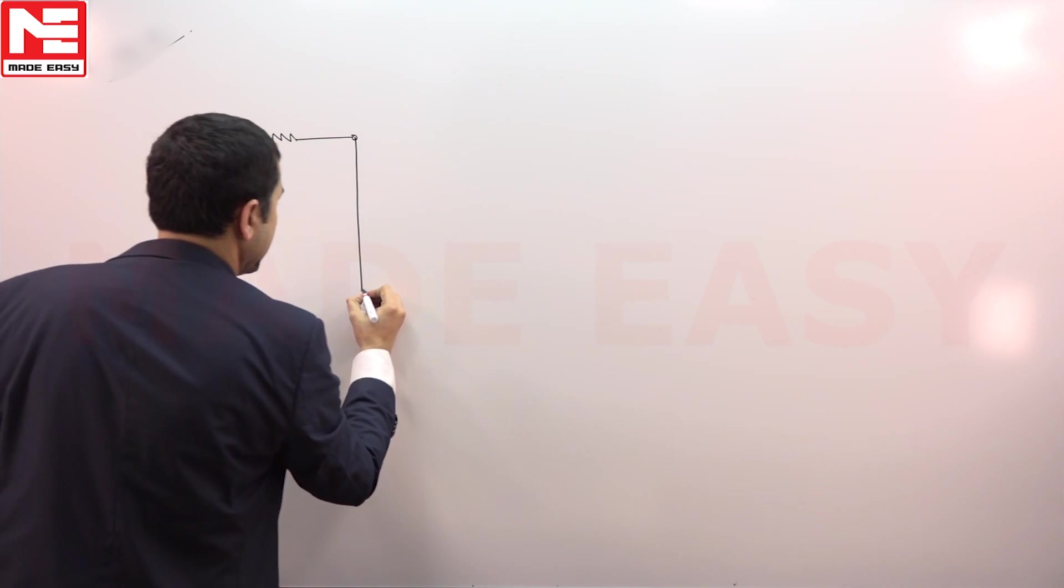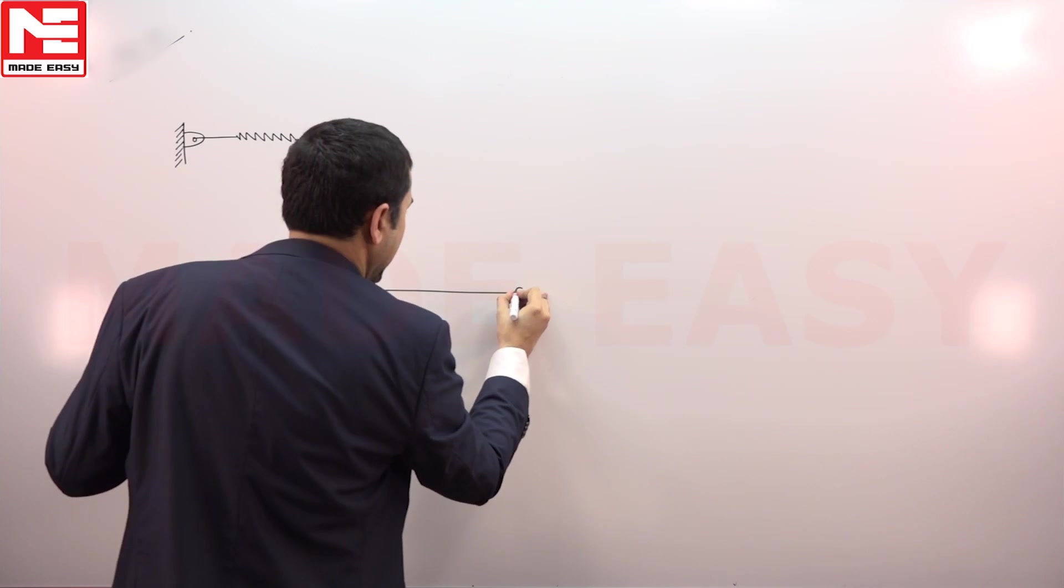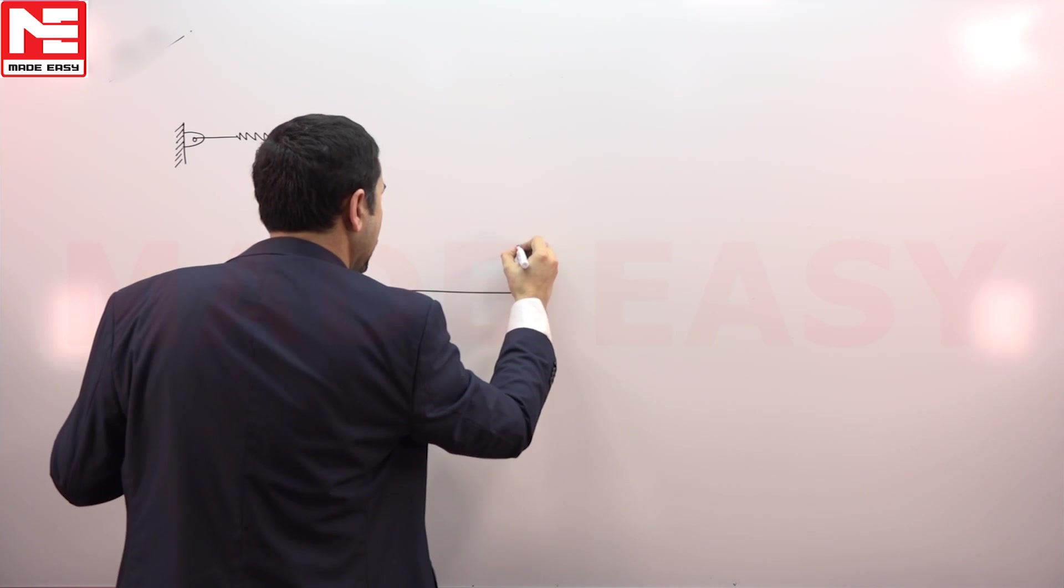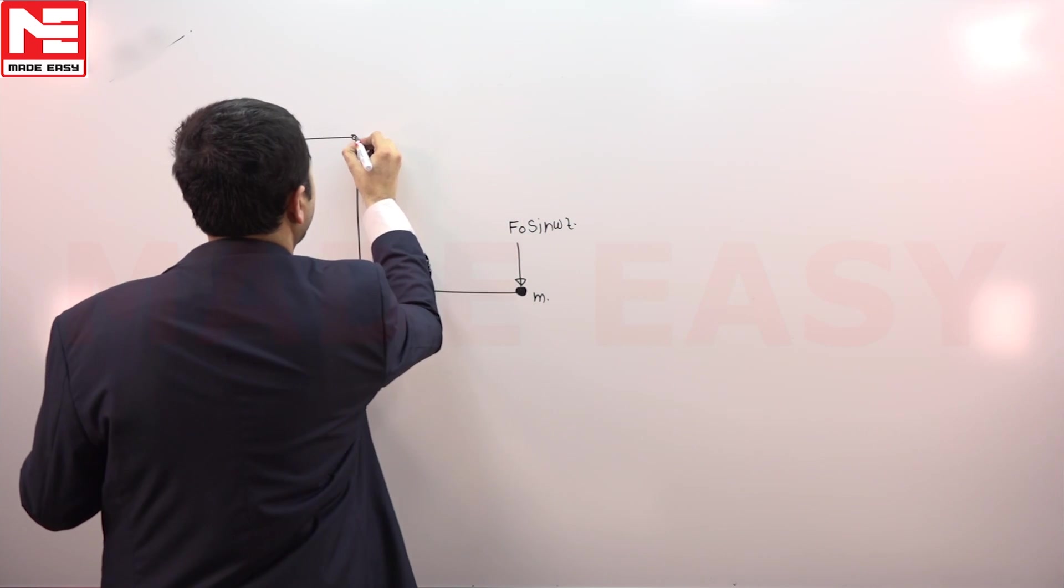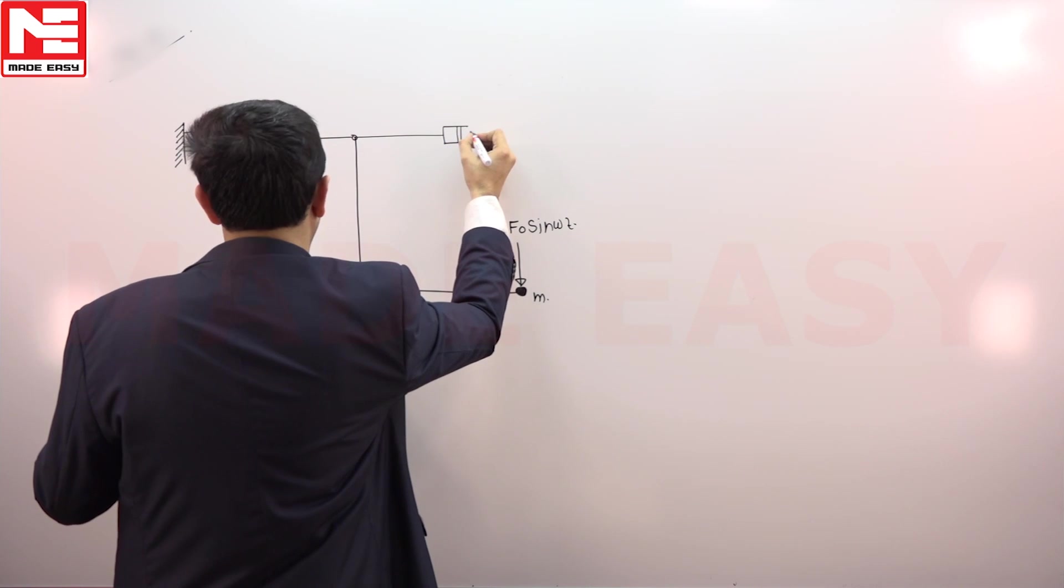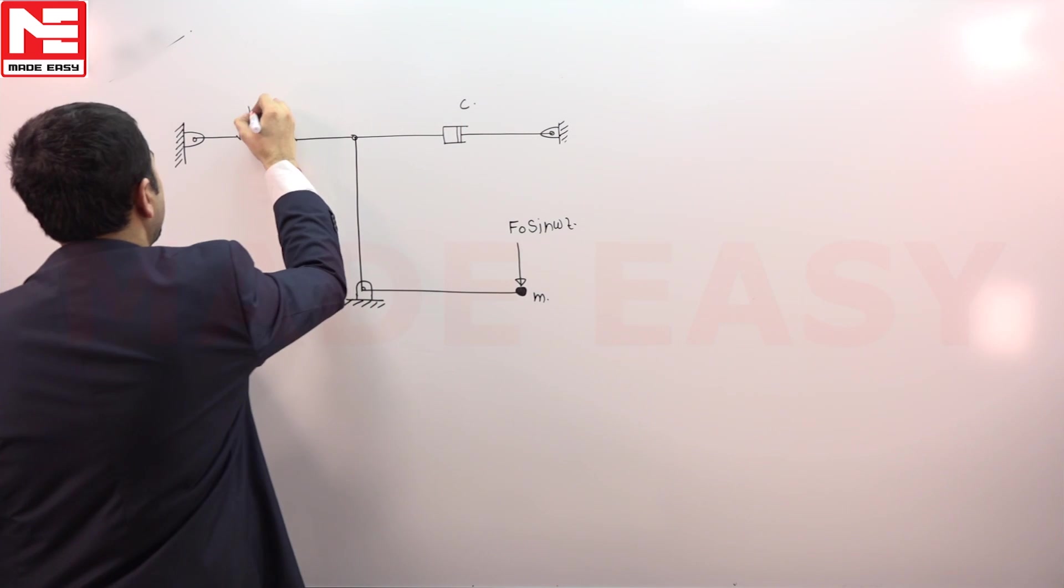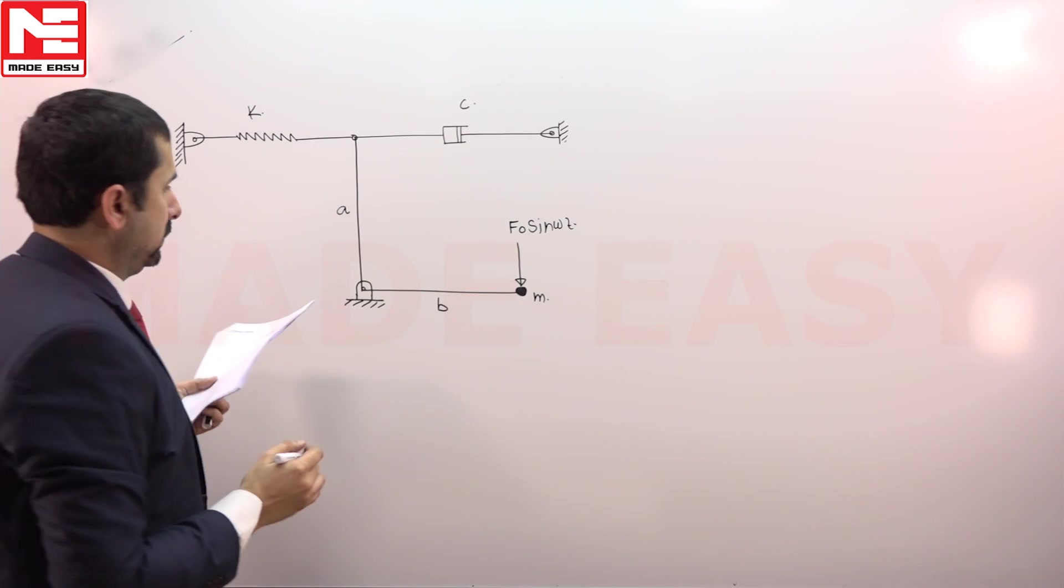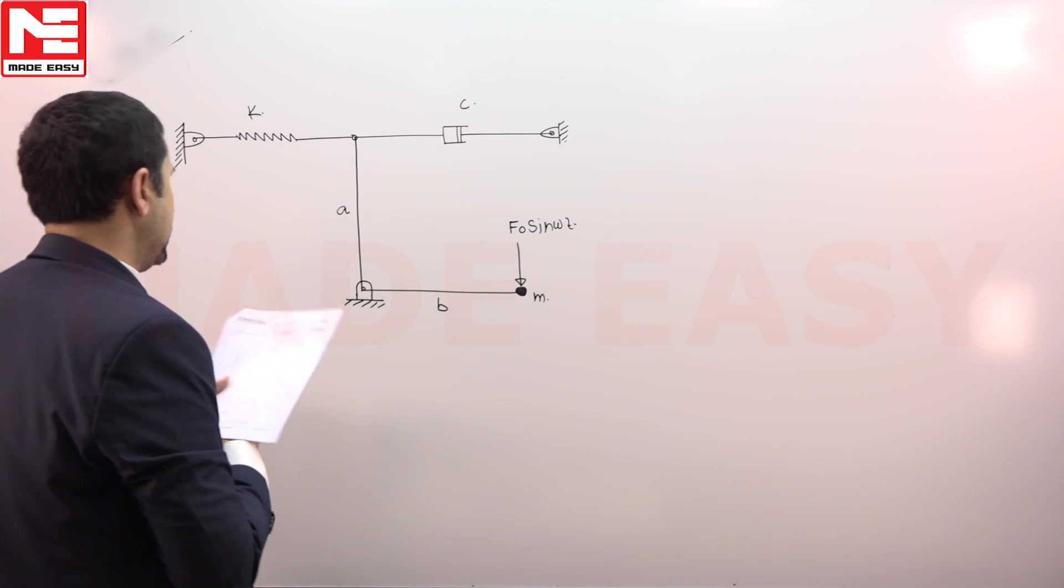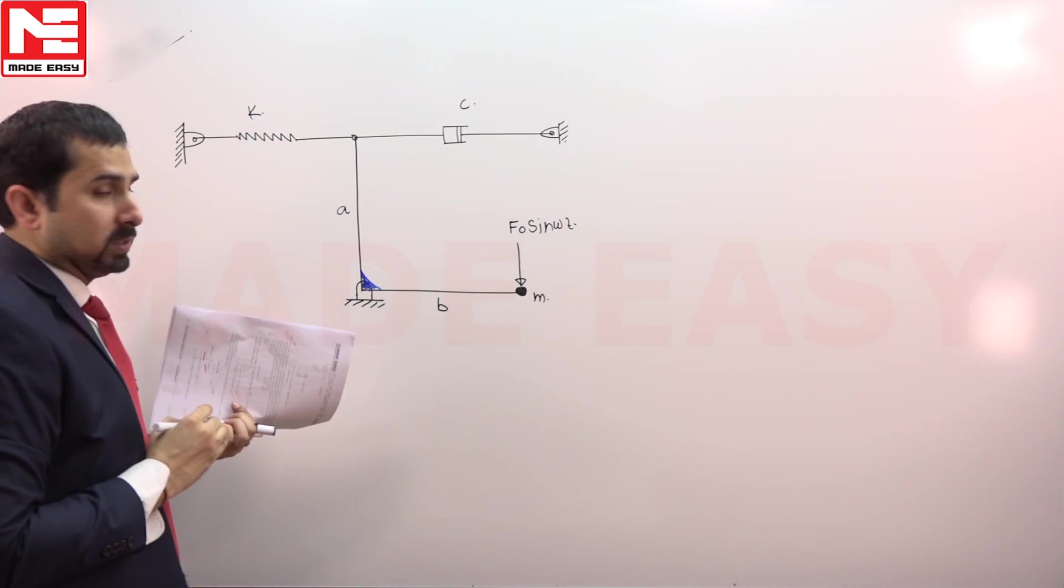Here one rod is there, L-shaped, and here one mass is there, M, on which some harmonic force is coming, F naught sin omega t. This is c, this is k, this distance is a, and this distance is b. This is complete one system.